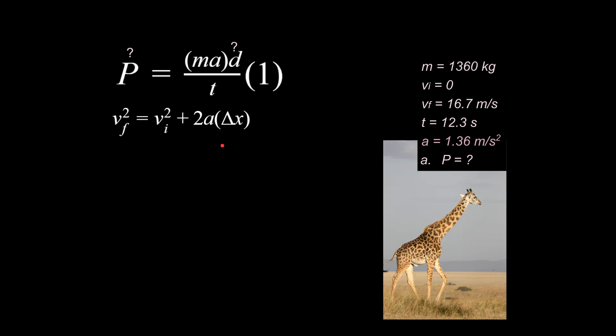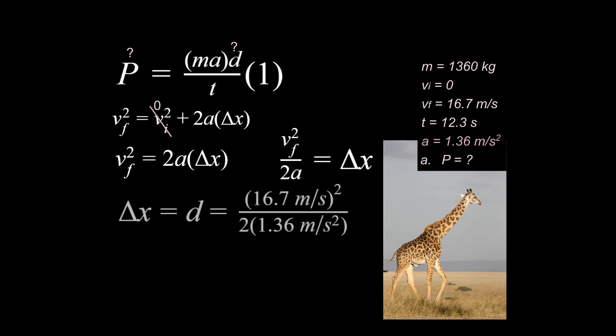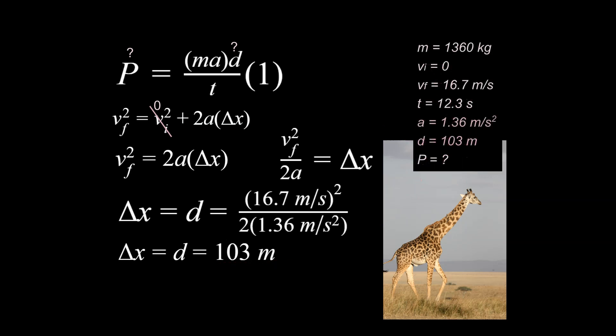I picked the third equation and started by writing it out. Is anything zero here that I can cancel out? And the answer is yeah, that v initial is zero, and that means we can simplify the equation. We isolate for our unknown, we plug in our numbers at the end, and we come up with the delta x or d value - that's called d in the work equation that's embedded in our power equation. Now we know our d or delta x value. I'm going to update my known values over here so we can keep track of what we know.